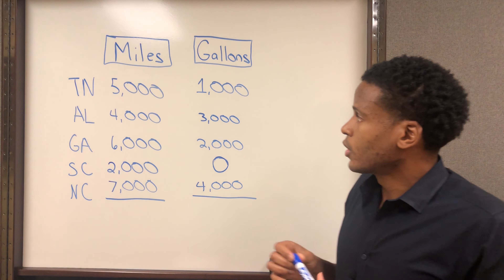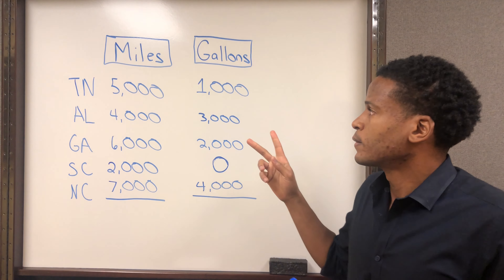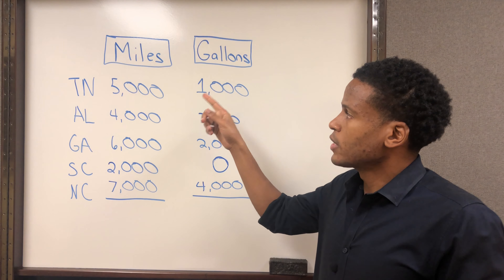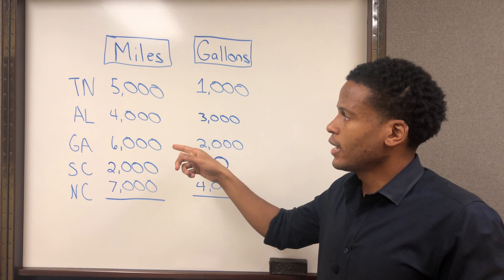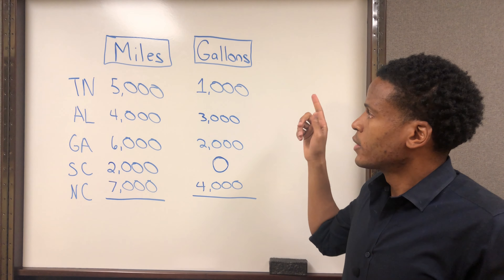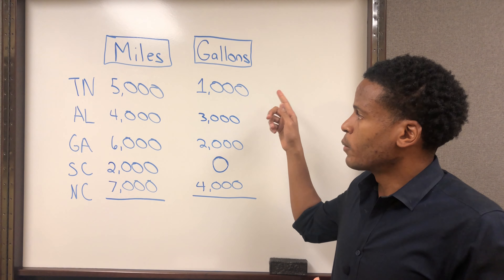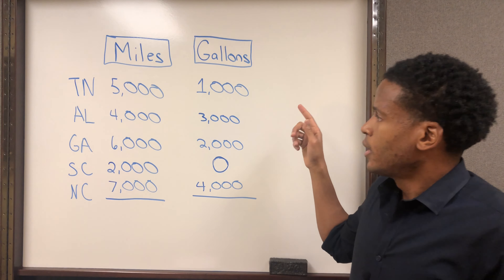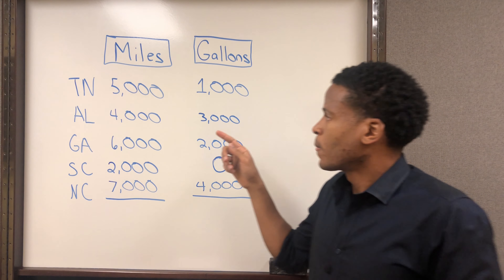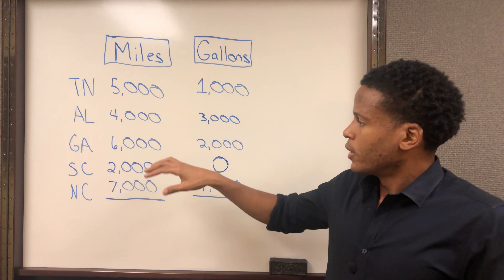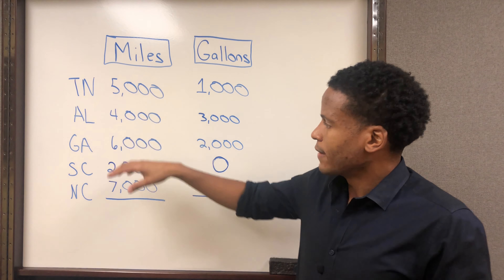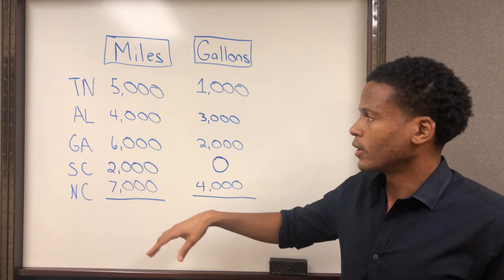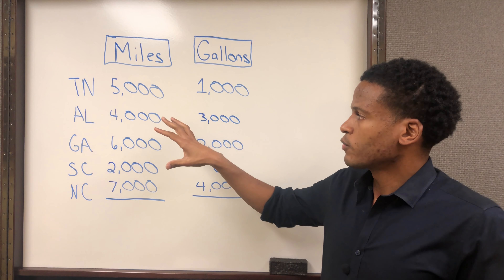So let's talk about what we need to file it. You're going to need two things. The first is the total miles that you drove in each state for that quarter, and the second is the total gallons of fuel purchased in each state for the quarter. In this example, you travel through five states: Tennessee, Alabama, Georgia, South Carolina, and North Carolina.